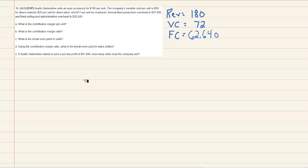Now that we have BEP — break-even point — down, let's talk about CVP: cost, volume, profit. The idea here is that we can take our cost data or our sales volume data and manipulate it to generate a desired profit. I've taken the info from the problem and copied it down. Revenue was $180,000; the company had variable costs of $30,000, $25,000, and $17,000, which I've added together for a total variable cost per unit. They also gave us numbers for fixed cost, which I've added together.